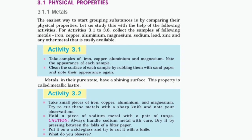For performing activities 3.1 to 3.6, collect samples of the following metals: iron, copper, aluminium, magnesium, sodium, lead, zinc, and any other metal that is easily available. Activity 3.1: Take samples of iron, copper, aluminium and magnesium. Note the appearance of each sample. Clean the surface of each sample by rubbing with sandpaper and note their appearance again. Metals, in their pure state, have a shining surface. This property is called metallic luster.